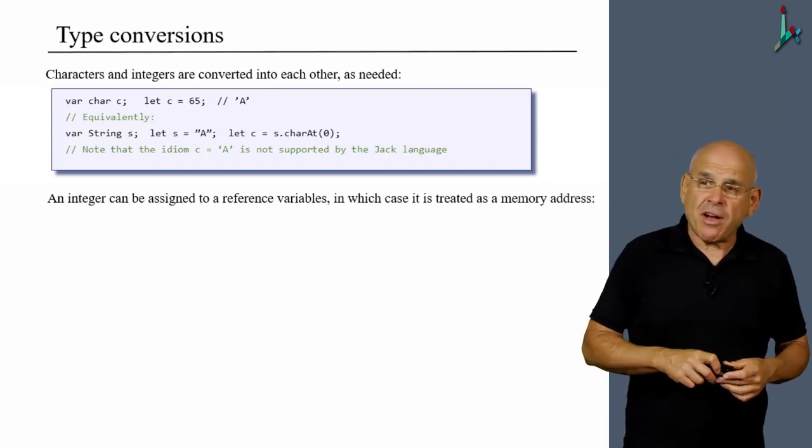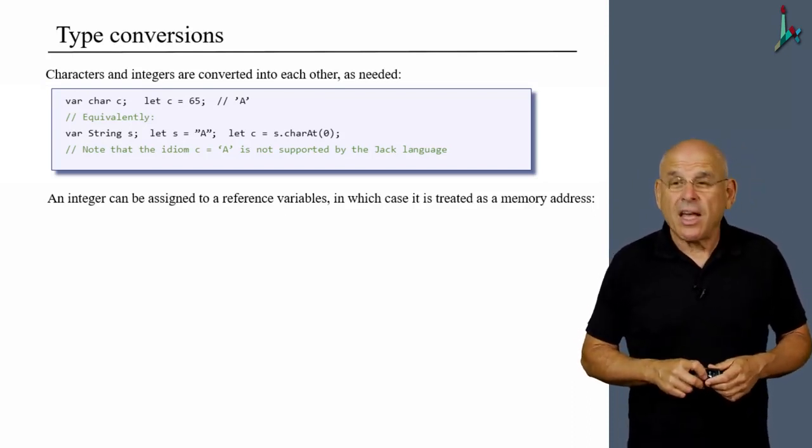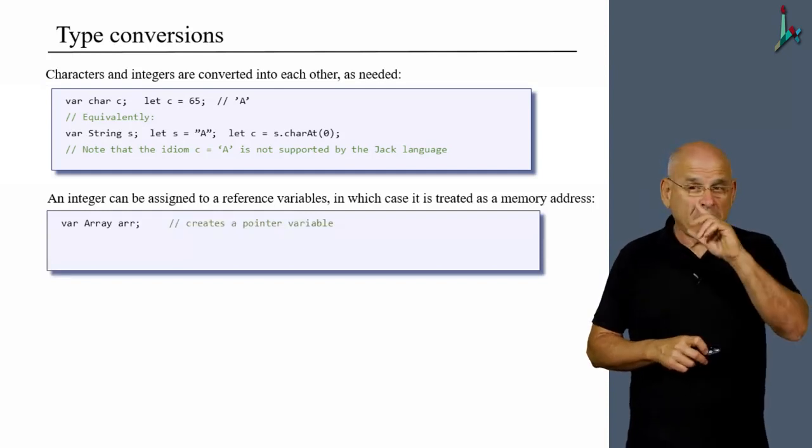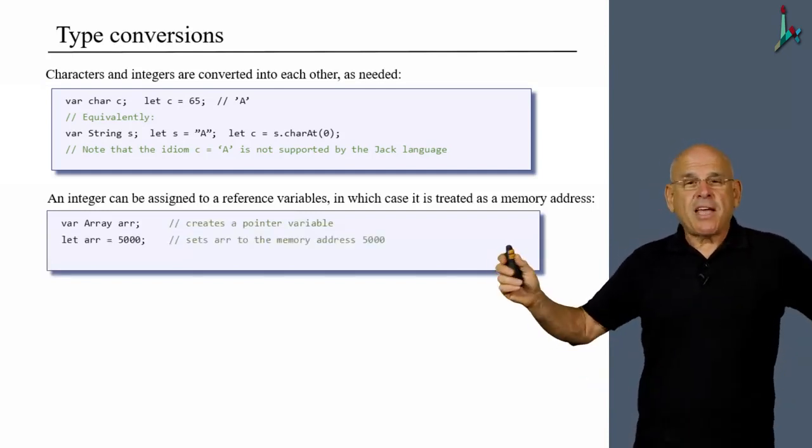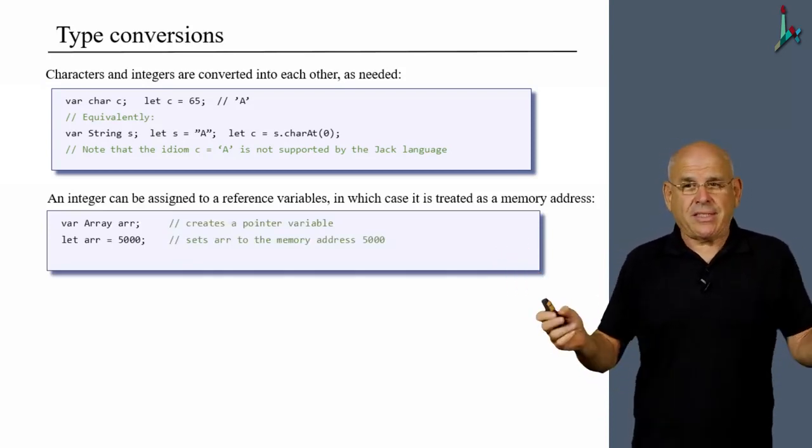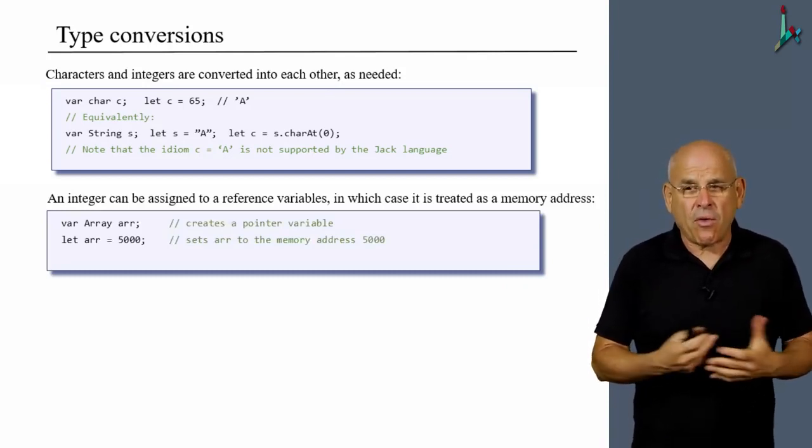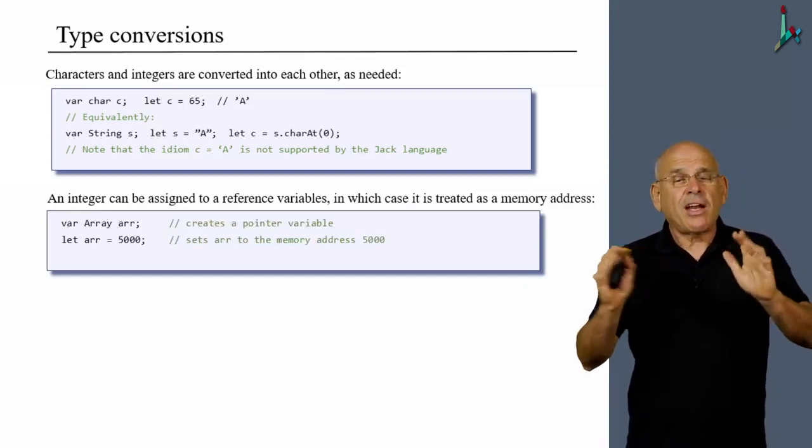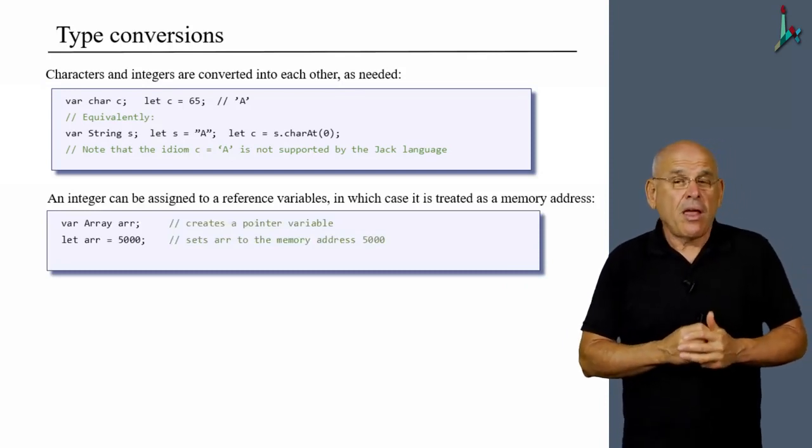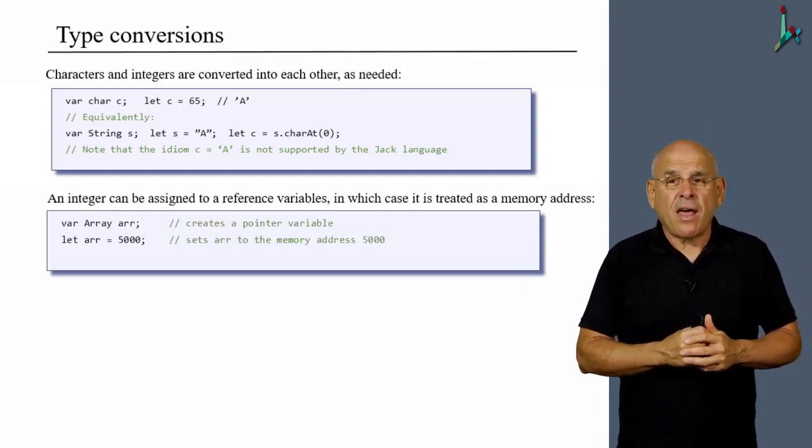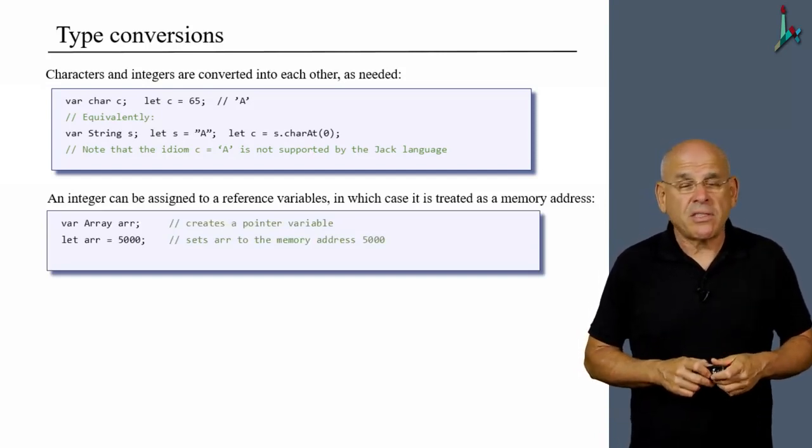Now an integer can be assigned to reference variables, in which case it is treated as a memory address. So consider this piece of code here. We create an array called ARR. And then we happily say ARR equals 5000, which is somewhat crazy, isn't it? Because ARR is supposed to be an array. And yet, the Jack language supports this kind of assignment. And if you do it, you basically tell the system that the ARR array ought to start in base address 5000.